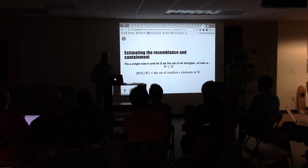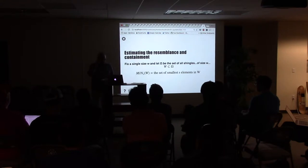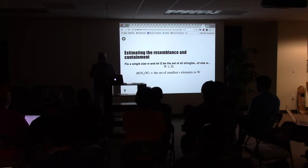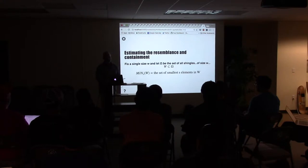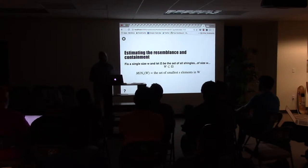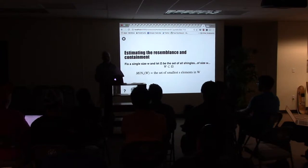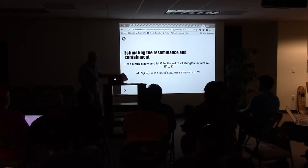That was the easy part. The next section of the paper talks about estimating the resemblance and containment — and the really important word is estimating. The important thing to keep in mind is that he's not trying to calculate the resemblance or containment exactly. He's trying to estimate them. This is fundamentally a technique based on probability and randomness.